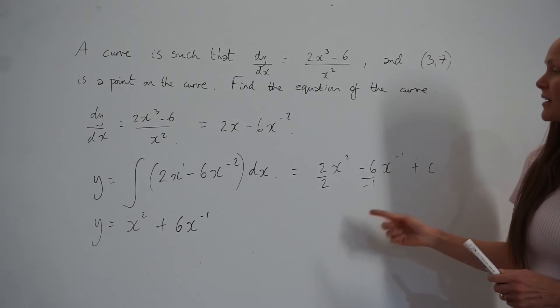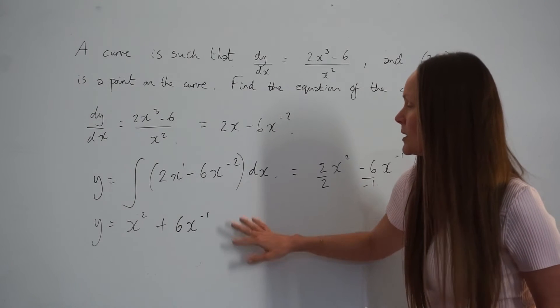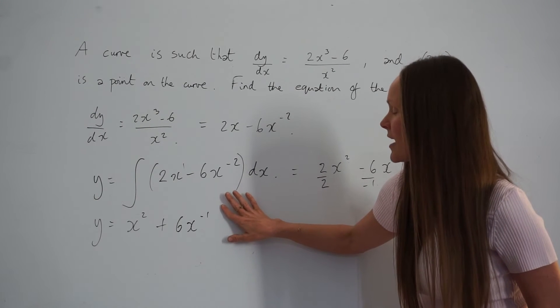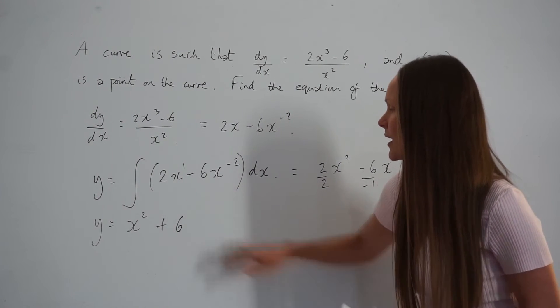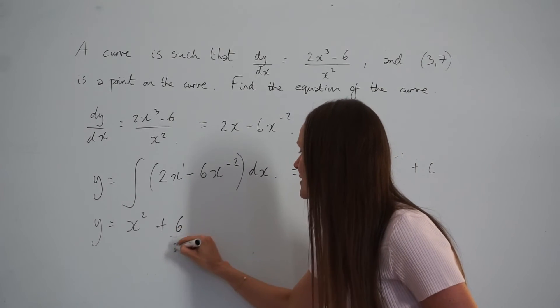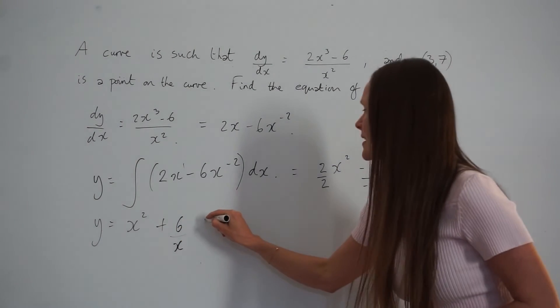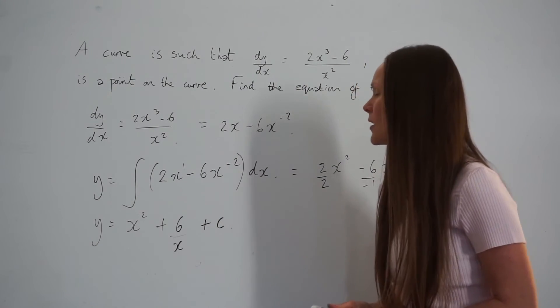I think it's nicer if you rewrite this as 6 over x instead. It'll be clearer for the next step. And don't forget your plus c. So this is the equation so far.